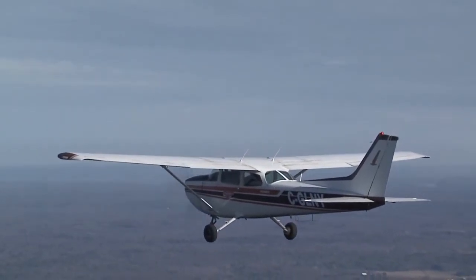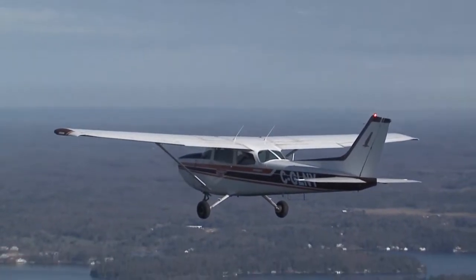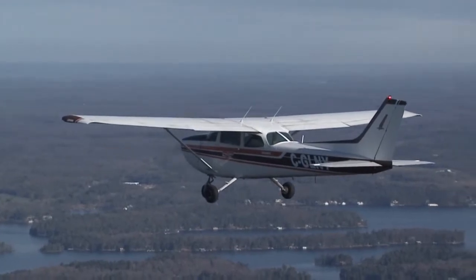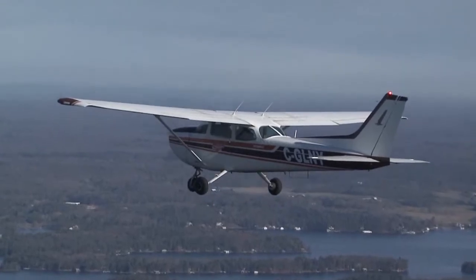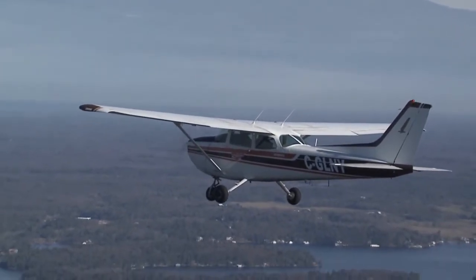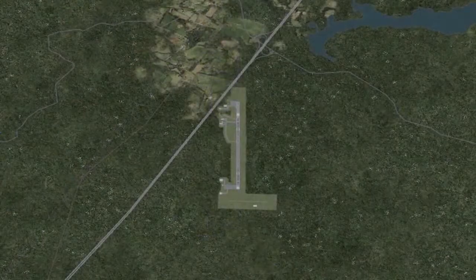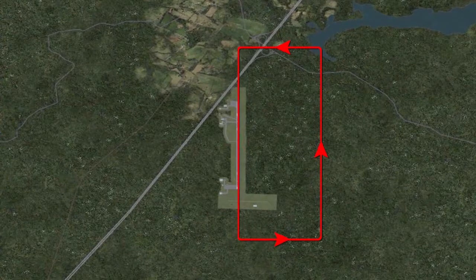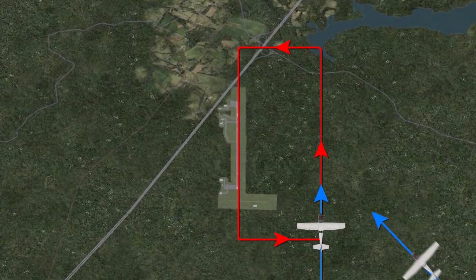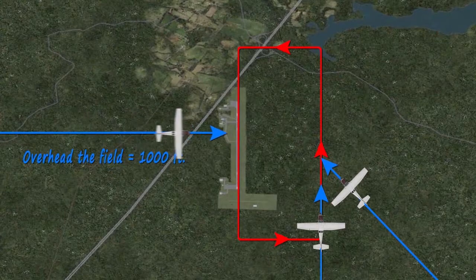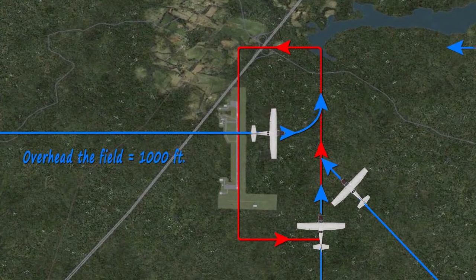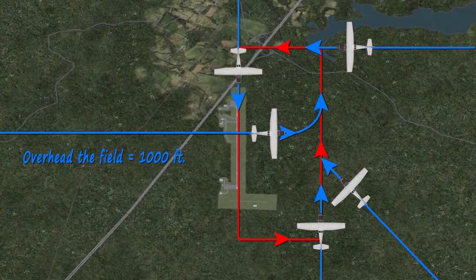Remember to keep your transmissions brief by using as much shorthand as possible. The MF operator will then either confirm your intentions or suggest alternative circuit entry options depending on any other aircraft they may be talking to. You might be asked to consider one of several different options available for your circuit entry at an MF airdrome, including a straight-in on the downwind leg, a 45-degree entry to downwind, overhead the field at 1,000 feet above ground level joining mid-downwind, straight-in on the base leg, or if the situation allows, straight-in on final.